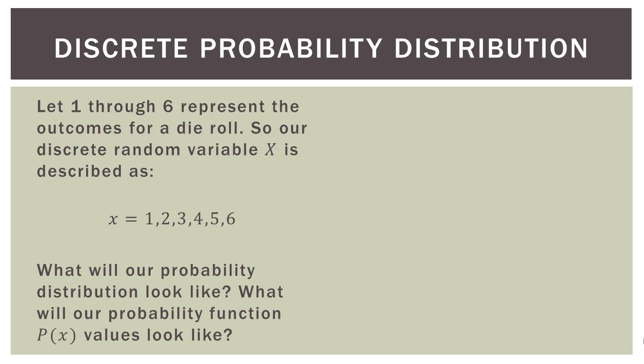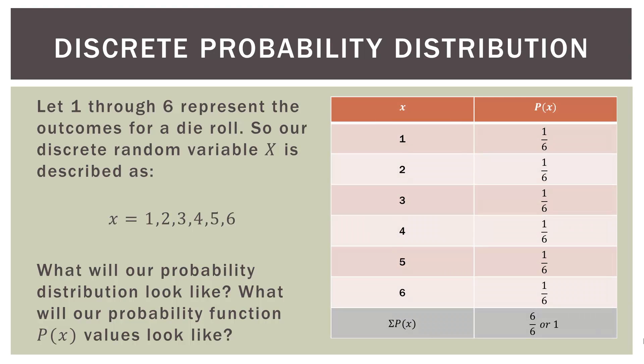What will our probability distribution look like? We'll make a chart with the outcomes of our random variable in the first column: 1, 2, 3, 4, 5, or 6. In the right-hand column we have the probability associated with each outcome. Since this is a fair die, the probability for each outcome will be the same — 1/6 for each. When we sum up all our probabilities, we have 6 over 6, or 1. So our probability total is 1 as it should be, and the probability of each outcome is the same.